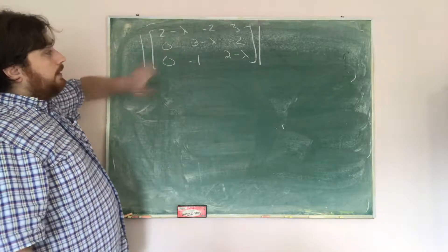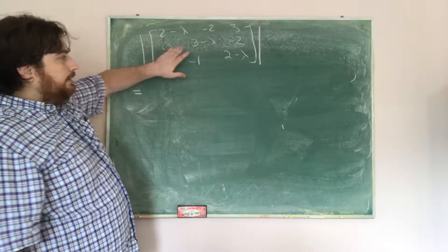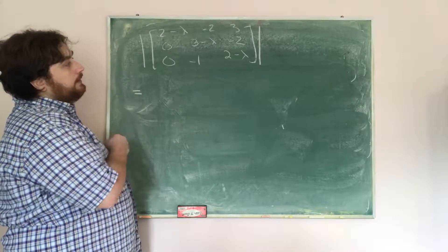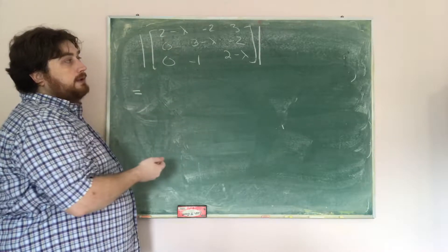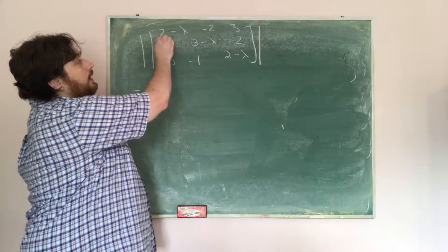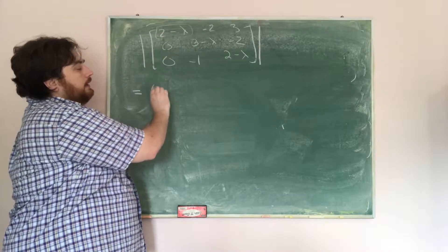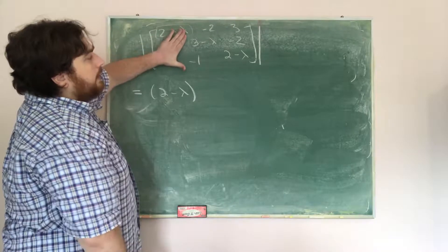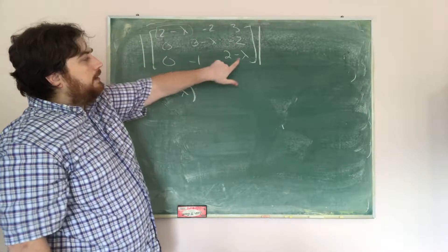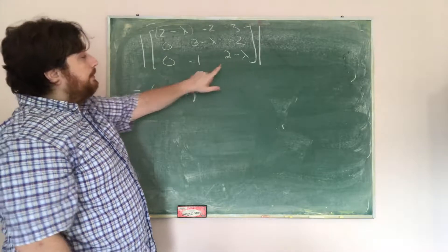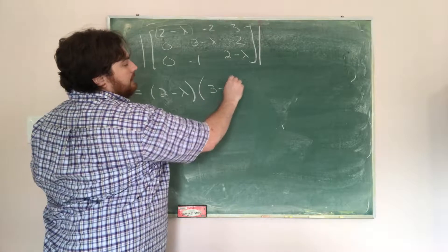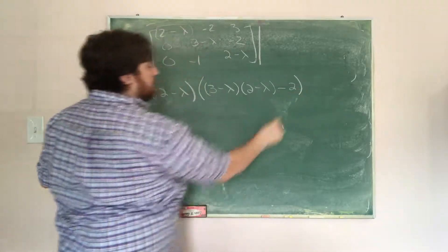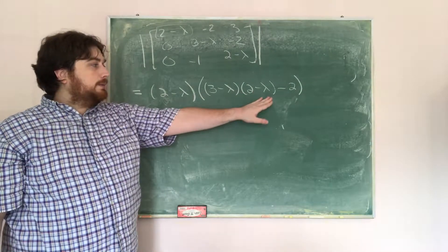So as we find our determinant, we have A − λI equal to [[2−λ, −2, 3], [0, 3−λ, −2], [0, −1, 2−λ]]. Picking the first column for cofactor expansion, we get (2−λ) times the determinant of the remaining 2×2 matrix [[3−λ, −2], [−1, 2−λ]], which equals (3−λ)(2−λ) minus (−2)(−1), giving us (2−λ) times [(3−λ)(2−λ) − 2].